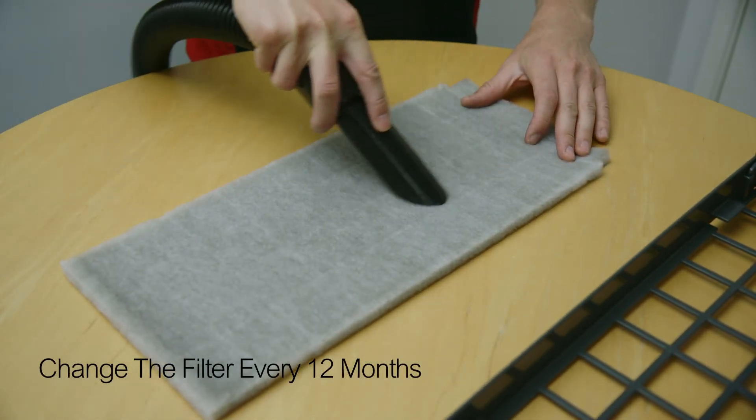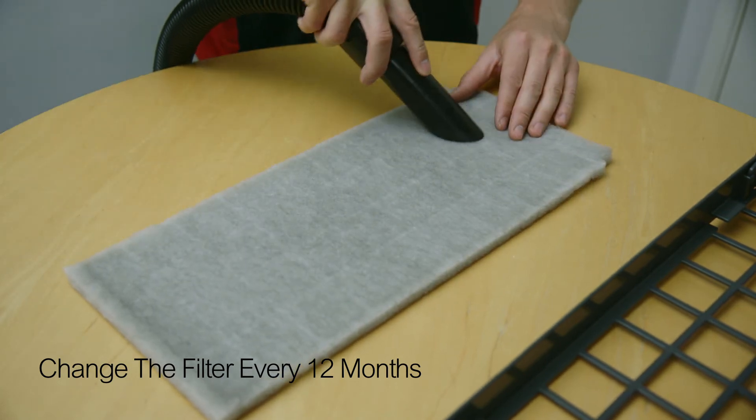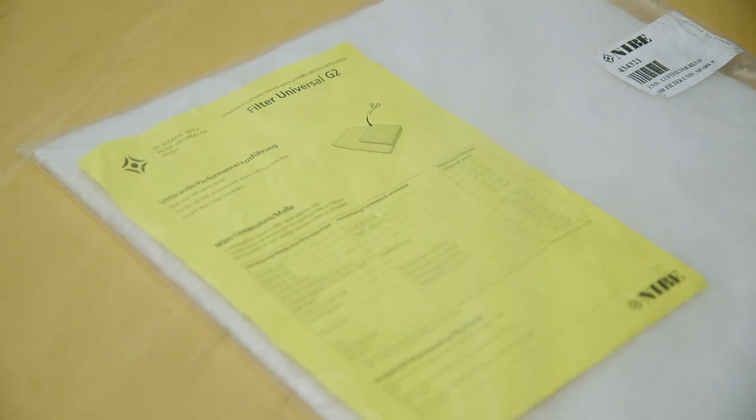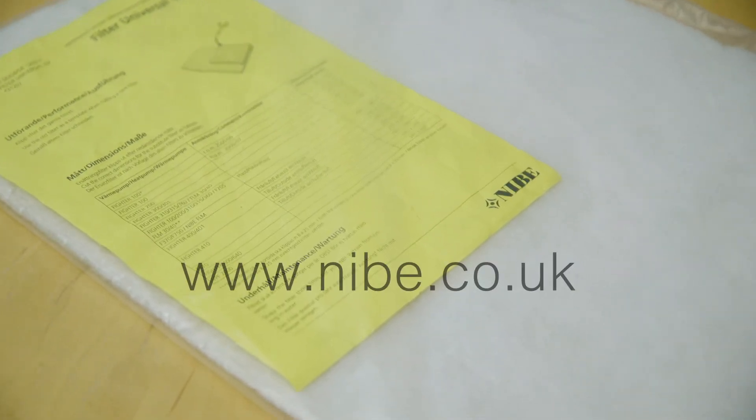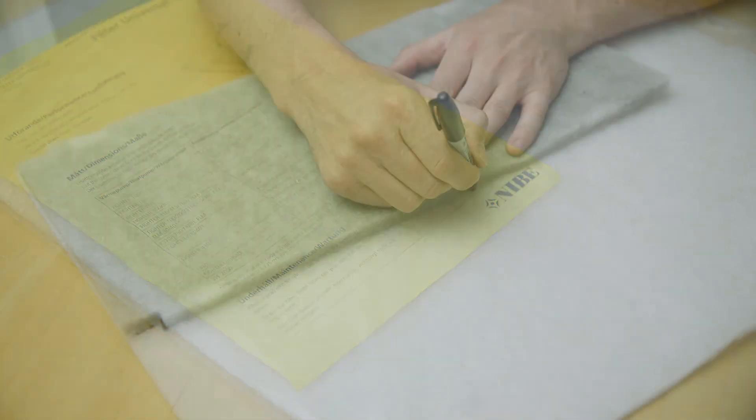Every 12 months or sooner if you notice any damage or holes in the filter, the filter membrane needs changing. You can order a replacement filter sheet from our website at www.nebe.co.uk.